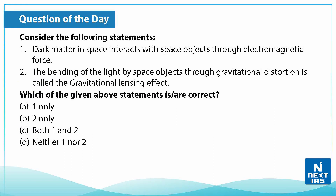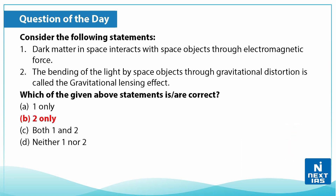Now let us take up a practice question on this topic. Consider the following statements. First, dark matter in space interacts with space objects through electromagnetic force. Second, the bending of light by space objects through gravitational distortion is called the gravitational lensing effect. Which of the above statements is correct? The correct answer is B — only the second statement is correct. The first statement is wrong, as dark matter in space interacts through gravitational pull.